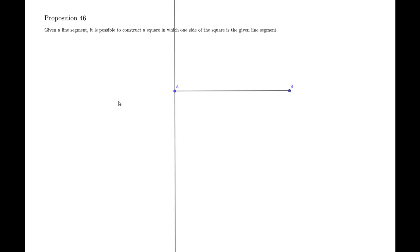We know that by Proposition 11 we are able to construct a line which is perpendicular to our line segment AB, which also happens to pass through our point A.